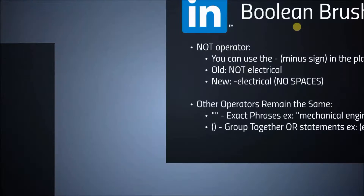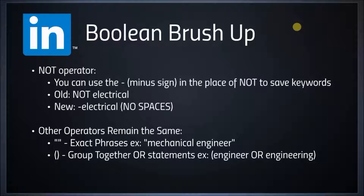The NOT operator is used to exclude things we do not want. For example, if we're searching for mechanical engineer and don't want the word process, we'd type NOT process. But to save on keywords, we can use the minus sign in place of NOT. The old method was to type NOT electrical; the new method is simply minus electrical. And remember, no spaces are used in this type of search.